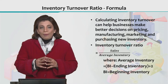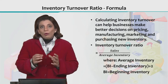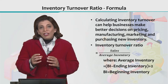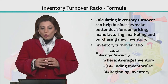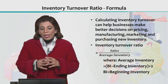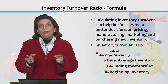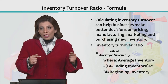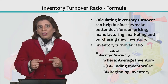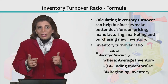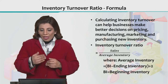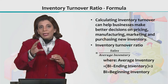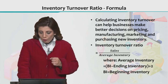When we look at the formula for the Inventory Turnover Ratio, the value of sales is placed in the numerator and the average inventory value is placed in the denominator. To calculate average inventory on a yearly basis, you take the inventory value at the beginning of the year and at the end of the year, add them together, and divide by 2.